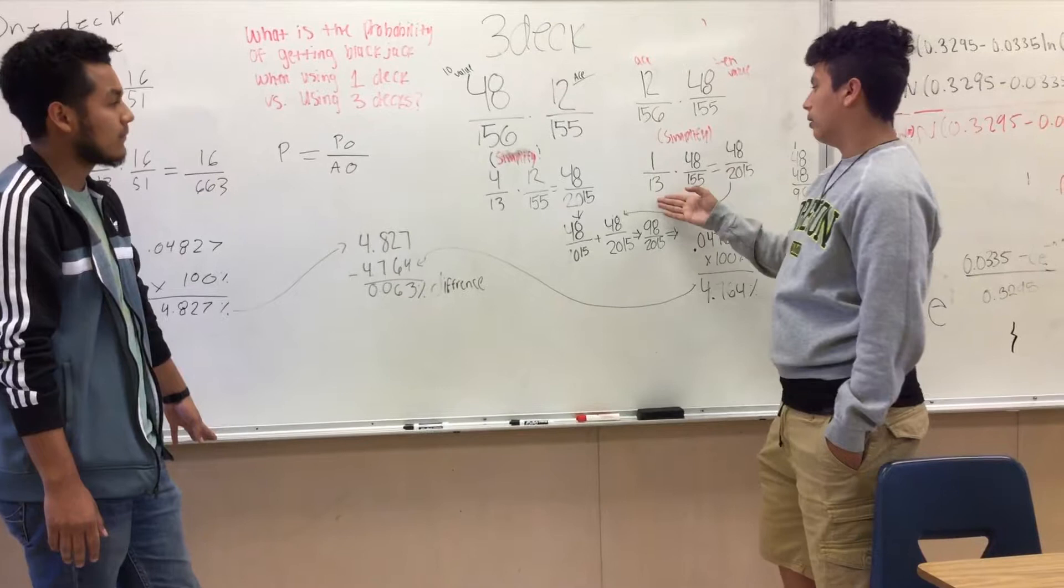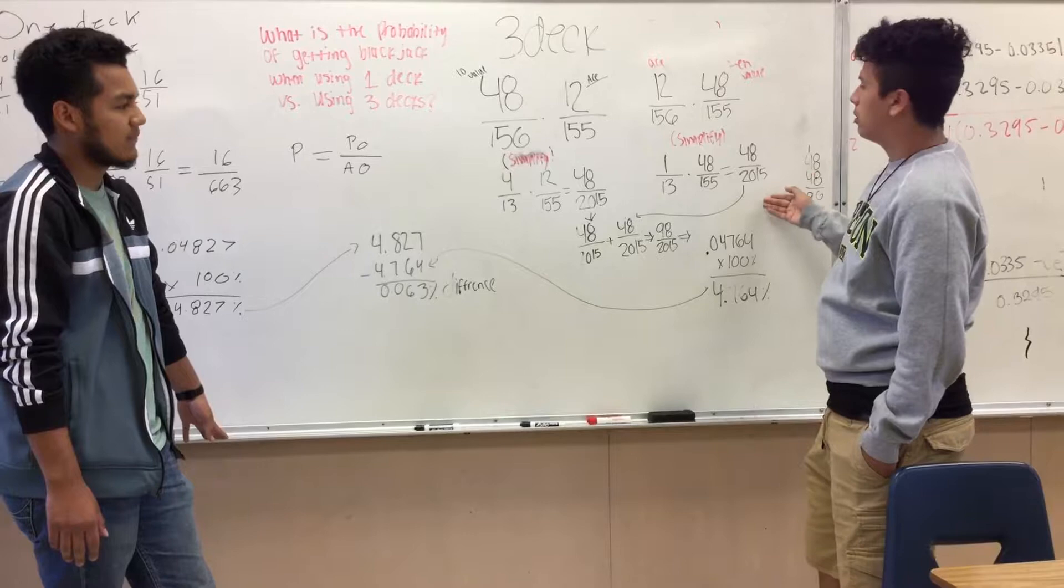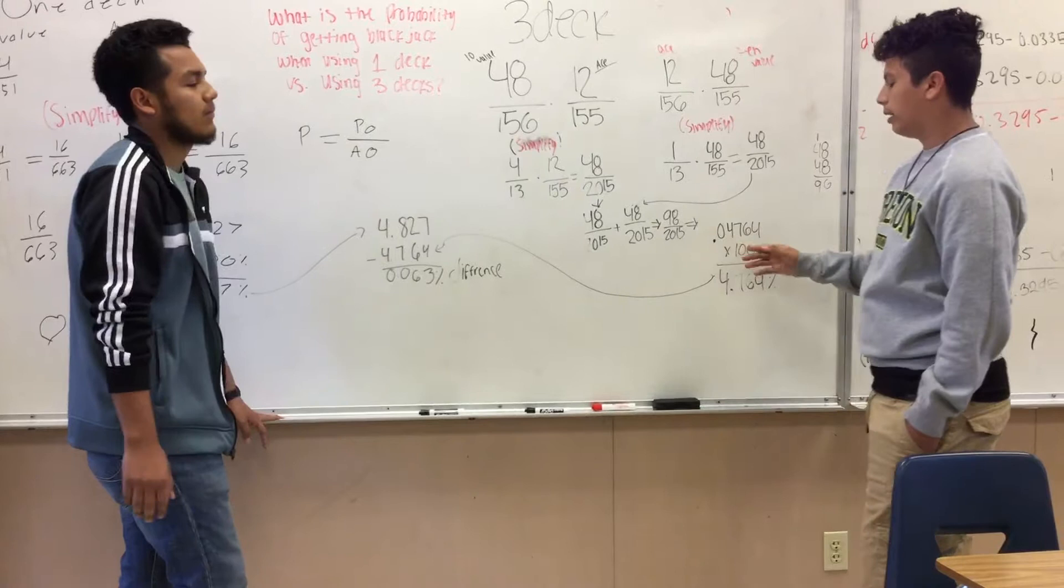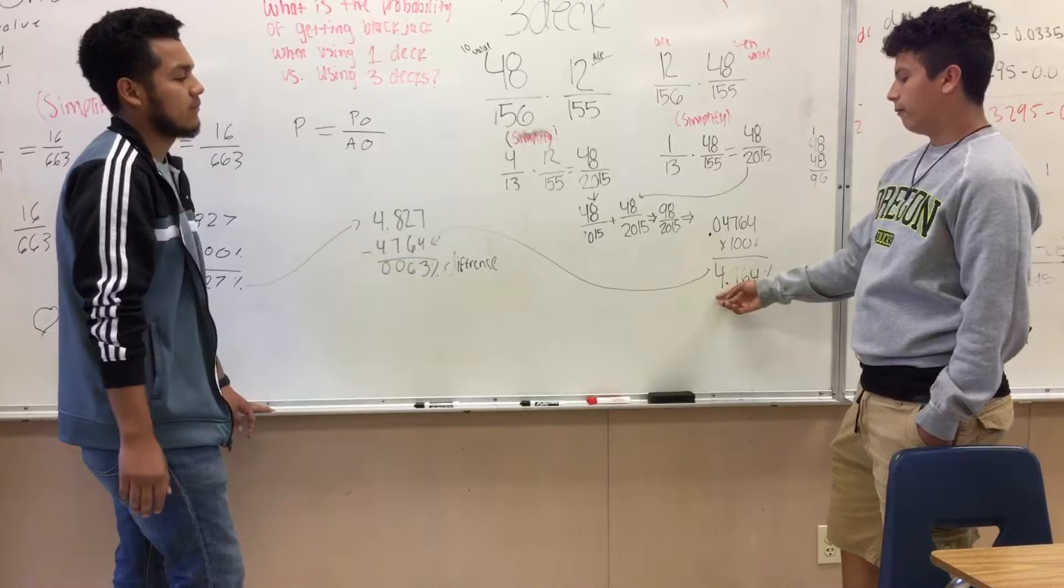Then we do the same thing: 1/13 times 48/155, and we got 48/2015. So we added them and get 98/2015. Then to convert to decimal form, we got 0.04764 times 100% to get a percent, which is 4.764%.